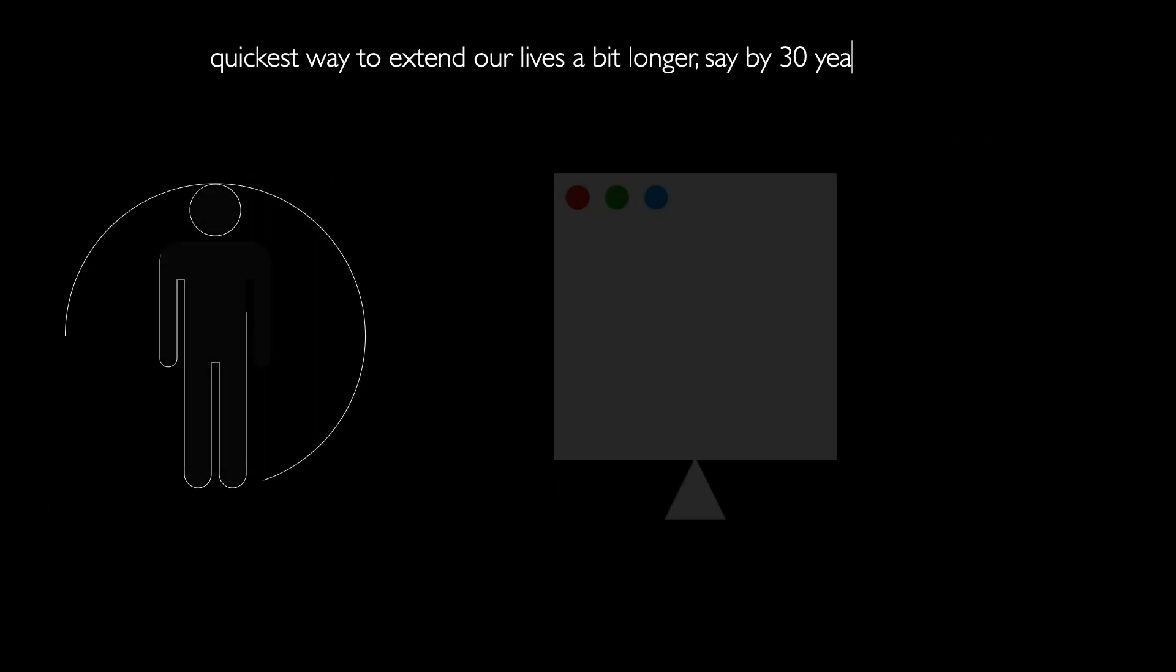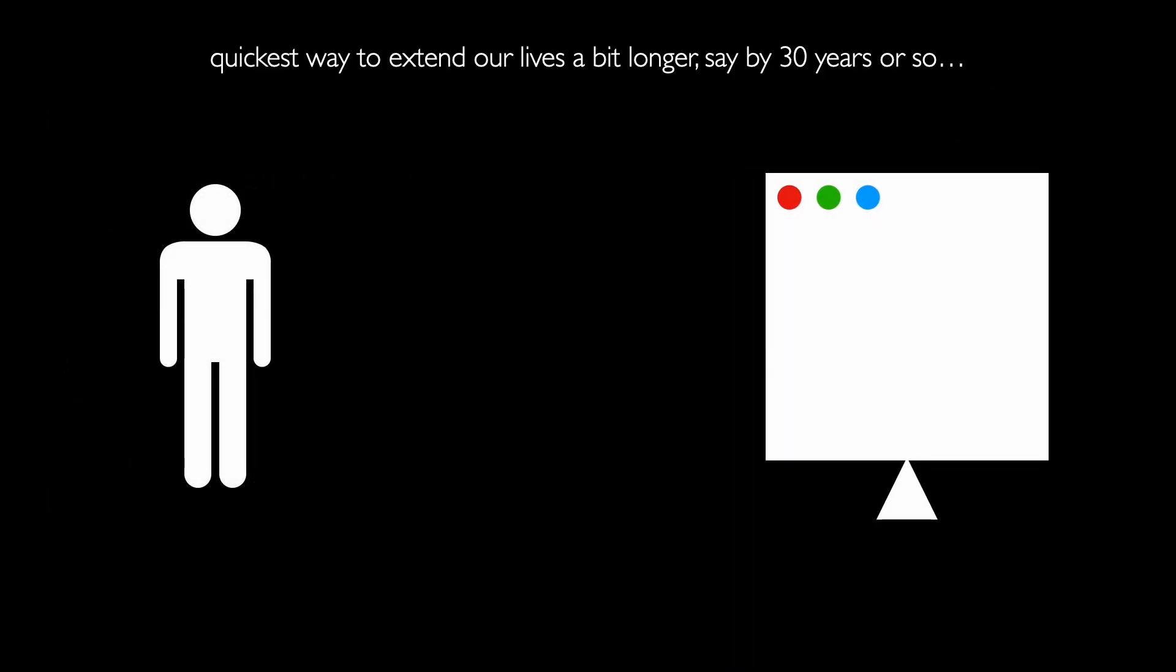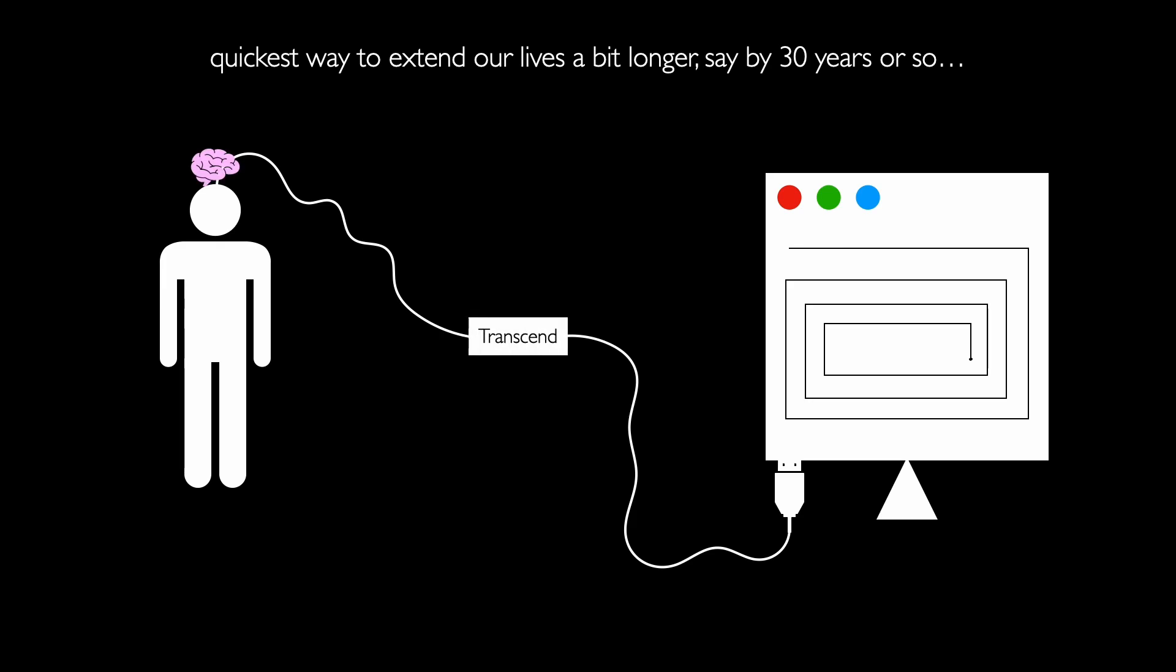Now what is the quickest way to extend our lives a bit longer, say by 30 years or so? Well, it's by transferring our consciousness to a machine. This is also known as mind uploading. It's basically you, but in digital form. And I'm not talking about some sims game version of you, but a legit copy of your consciousness stored somewhere digitally, like in some sort of device.